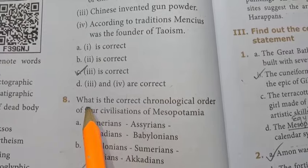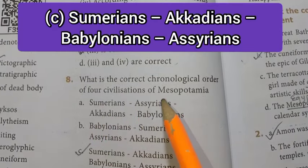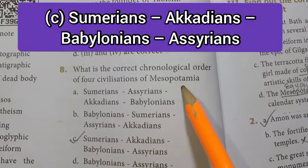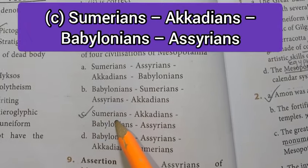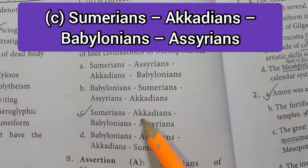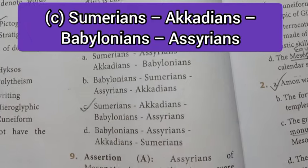Eighth question: what is the correct chronological order of the four civilizations of Mesopotamia? Answer is C option: Sumerians, Akkadians, Babylonians, Assyrians.